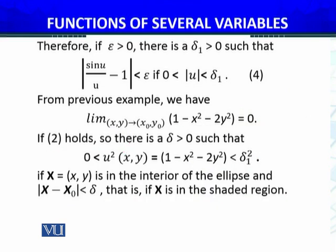If two holds - two kya tha: sin(r)/r limit as r approaches to zero equals one - so there is a δ > 0 such that we have this one if x is in the interior point of the ellipse and |x - x₀| < δ, that is if x is in the shaded region jo ke maine figure aapko dikhaya tha.